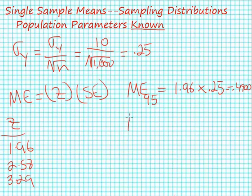My second margin of error will be 99, and that will equal 2.58 times 0.25, which equals 0.645. And my third margin of error will be 99.9, which equals 3.29 times 0.25, and that equals 0.8225.